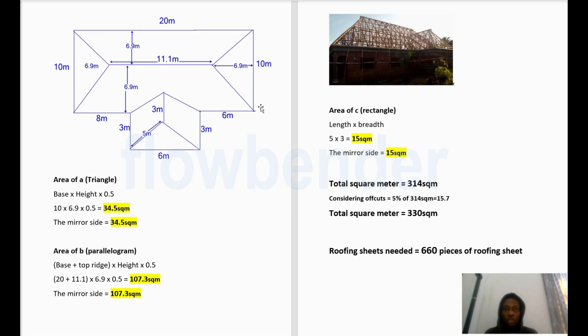So the first thing we want to do is to look at all the possible shapes we have here. So we have a triangle here, we have a parallelogram here, we have a triangle here, we have a rectangle here, we have a rectangle here. So I'm just going to try to make it very simple. Okay, so let me sketch something so you have an understanding of how I do my calculation.